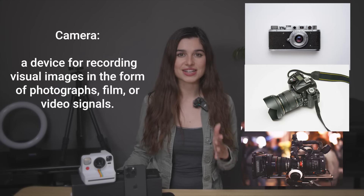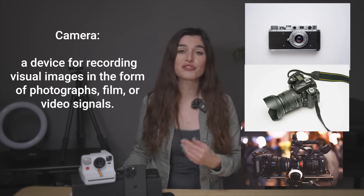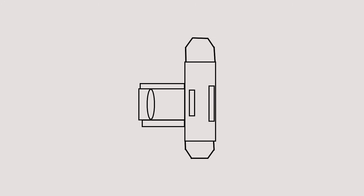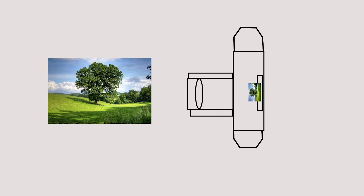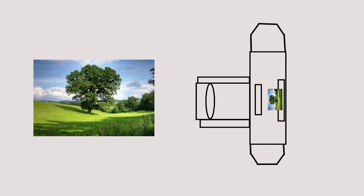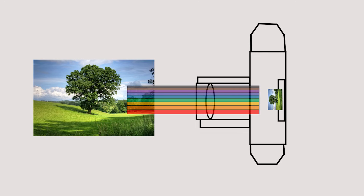A camera is defined as a device for recording visual images in the form of photographs, film, or video signals. In a camera, you will have a lens and a target. A target could be photosensitive film or an electronic sensor. When you are ready to take a photo, you press the shutter button and it temporarily opens the shutter so that light can be projected onto a target. We record this image by translating the amount of light in the scene. Let's refresh your chemistry and physics to understand the mechanics of this process.